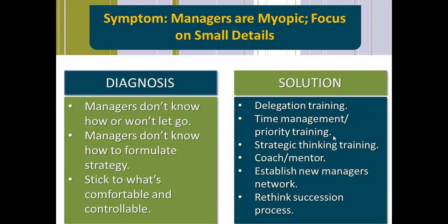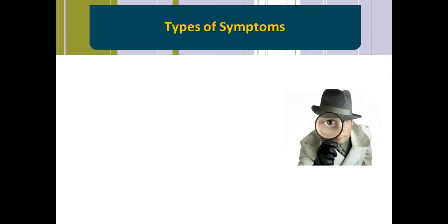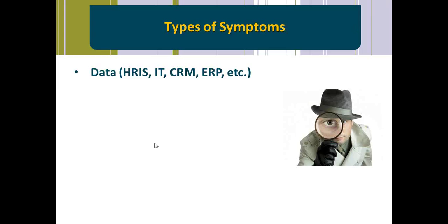Let's take a step back and look at these four steps. What are some types of symptoms that can be out there? Data is certainly a wonderful way to get symptoms — data from your HRIS, your IT, your CRM, your ERP, et cetera. Sometimes you have to go outside your comfort zone of your HRIS and start to talk to people in the departments that might manage these — particularly IT, your salespeople involved in the CRM, whoever is running your ERP system. You need to become a detective.